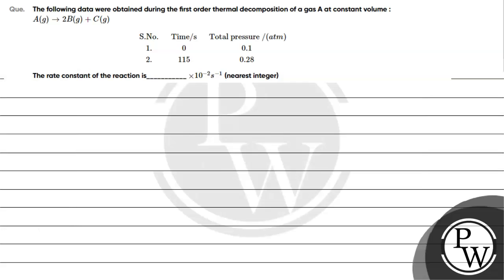Let's read this question. The following data were obtained during the first-order thermal decomposition of a gas at constant volume. The data is given. We need to find the rate constant for the reaction in the form of × 10^-2 per second.